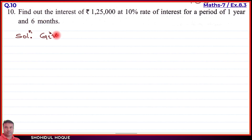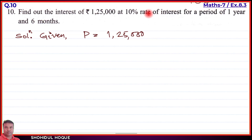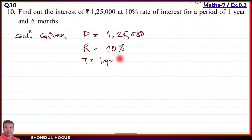Writing the given values: P = 1,25,000; R = 10 percent; T = 1 year and 6 months. Since the time has mixed units (years and months), we need to convert everything to years before applying the formula.